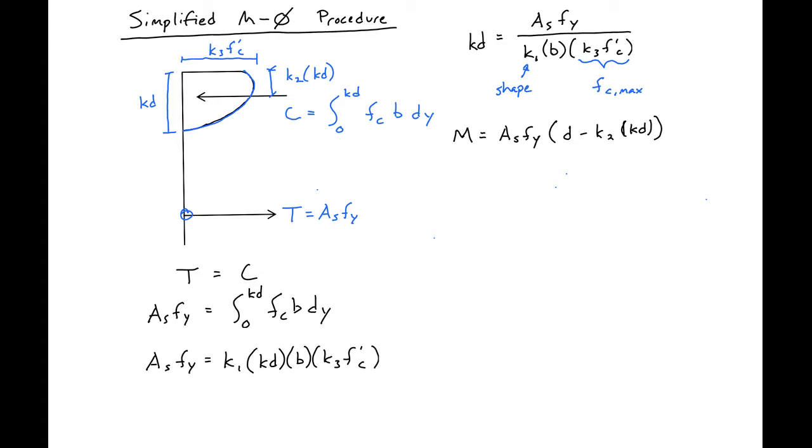Now substituting in our Kd, we'll find our moment expression: Asfy times D minus K2 Asfy over K1 B K3 F'c. We'll next define our tensile reinforcement index.